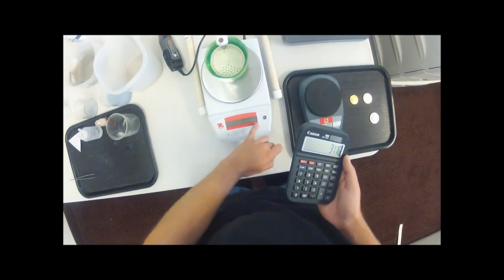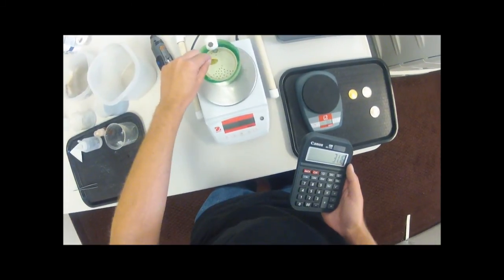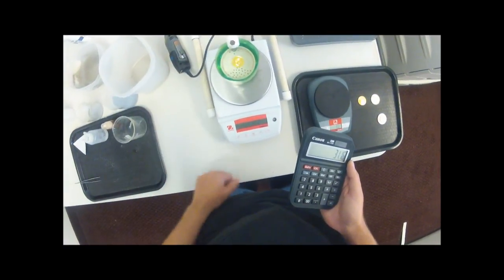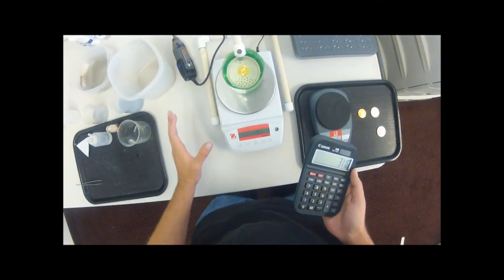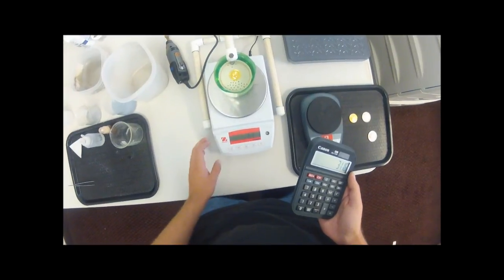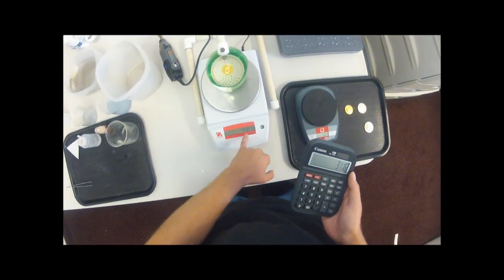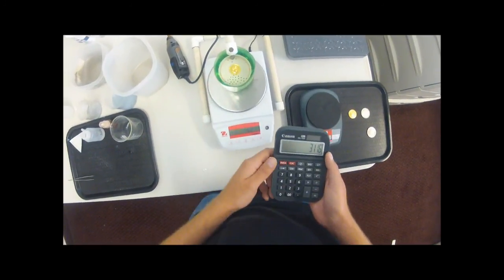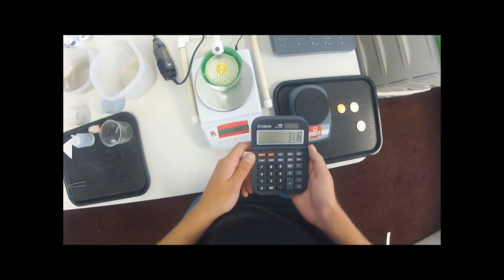And then we'll make sure the scale reads zero again and drop it onto this tray that's suspended in the water. So now, since there's nothing other than the water touching the scale, the scale is going to measure the displacement of the water. So there's 1.63 grams of water that has just been displaced from placing that coin in there.